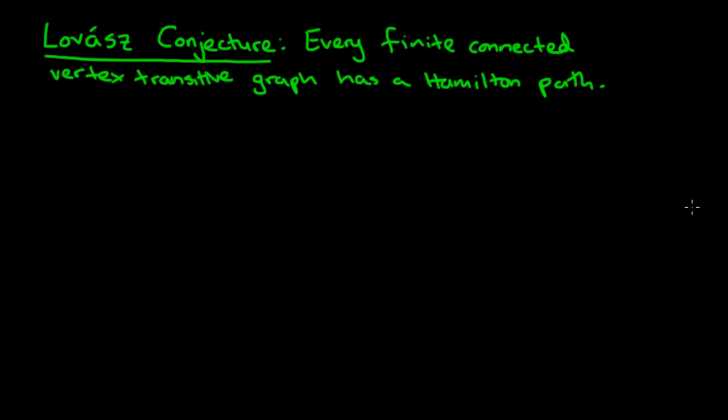In this video, I'd like to talk a little bit about what is known, and in particular what is unknown, about Hamilton paths and Hamilton cycles in graphs. Back in 1970, a mathematician named Lovász conjectured that every finite connected vertex transitive graph has a Hamilton path. We know what finite means - there's a finite number of vertices, and we understand what connected means.